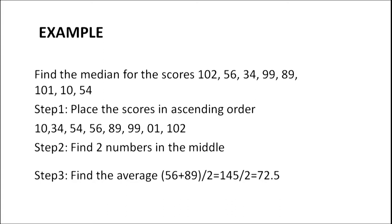Example: find the median for the scores 102, 56, 34, 99, 89, 101, 10 and 54. Step 1: place the scores in ascending order — 10, 34, 54, 56, 89, 99, 101 and 102. Step 2: find the numbers in the middle position — they are 56 and 89. Step 3: median equals the average of 56 and 89, which is (56 + 89) / 2 = 145 / 2 = 72.5.